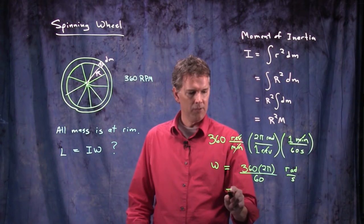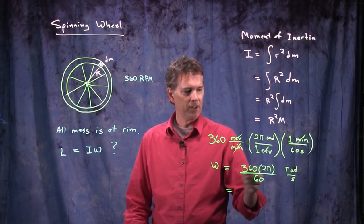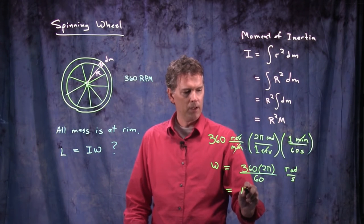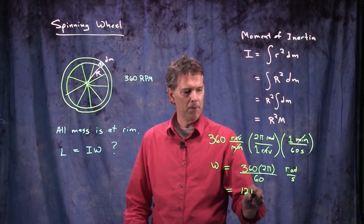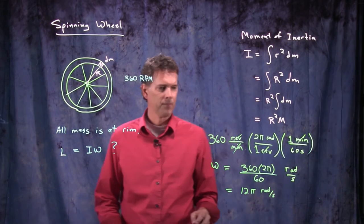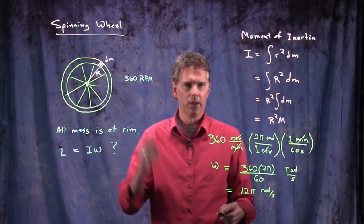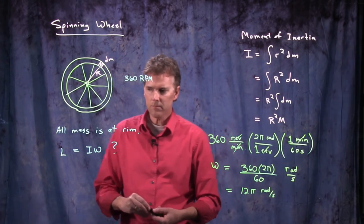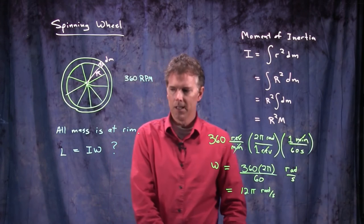360 over 60 is just 6. 6 times 2 is 12. And so we get 12 pi radians per second. We just arbitrarily chose 360. All right, so now let's calculate the angular momentum.